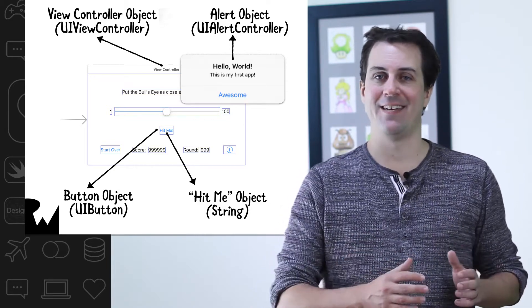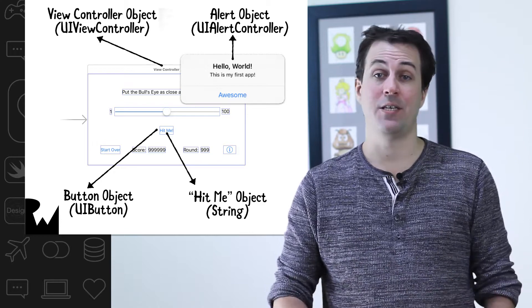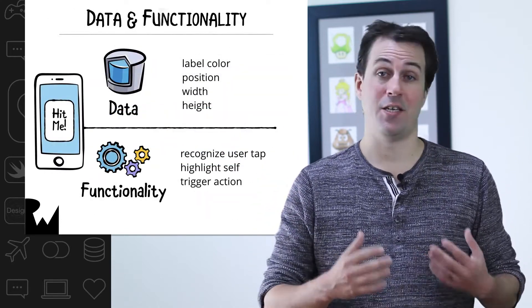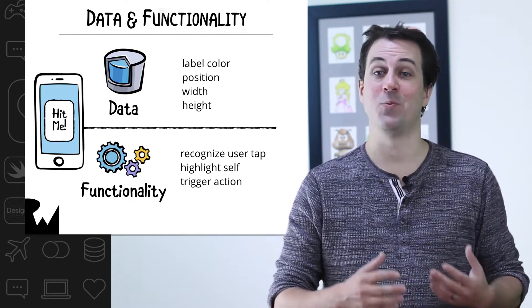An object can have both data and functionality. For example, consider the hit me button in your app. First, it has some data, such as its color, its position on the screen, its width, or its height.